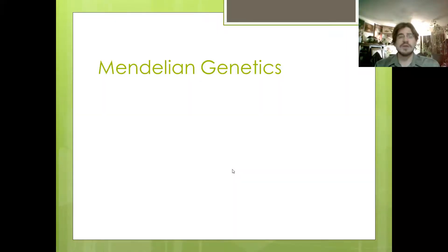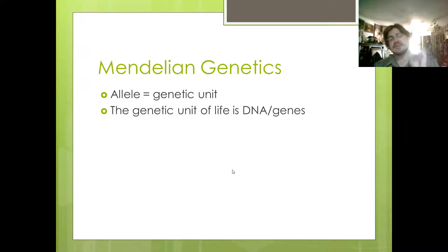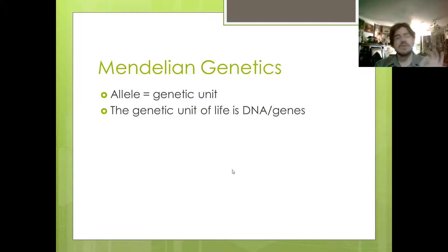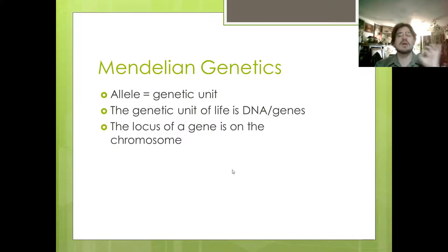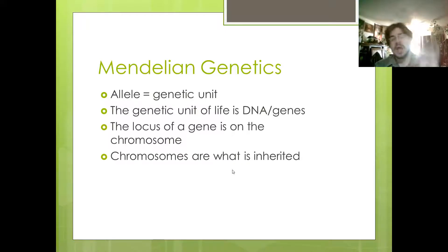Mendelian genetics talks about alleles being the genetic unit. Well, we know that the genetic unit of life is DNA — it is a single gene, not an allele. We also know that you carry your genes on chromosomes. So the locus, or location, of a gene is on the chromosome. And so it is the chromosomes that are inherited, not the genes.